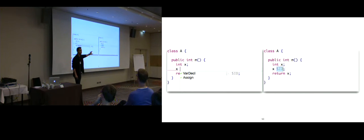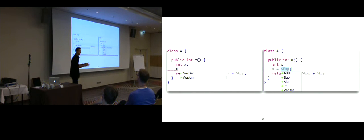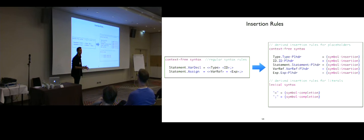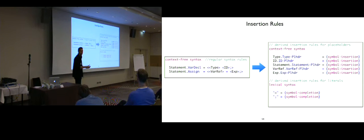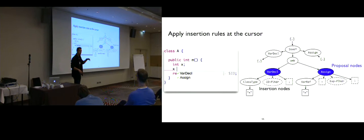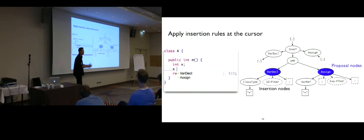We use the 'x' already in the program to figure out what kind of statements we can use it as a starting point to construct a valid statement. For example, 'x' can be used as the type of a variable declaration in this toy Java-like language. Note that this is syntactic code completion — we are producing a syntactically valid program even though 'x' is not a type. We can also use 'x' as the left-hand side of an assignment. We do this using the parser: from the syntax definition we derive insertion rules, which the parser uses to figure out where to add a placeholder at the cursor position without consuming input.